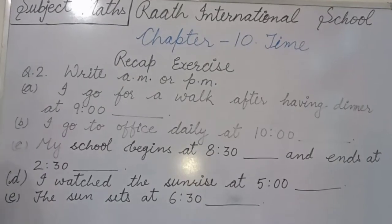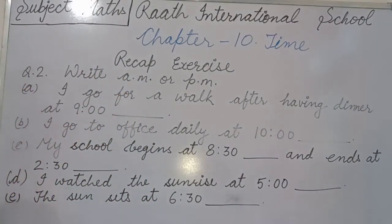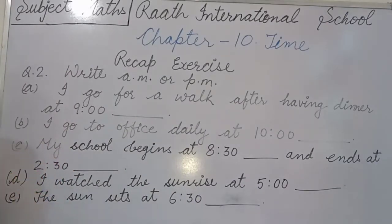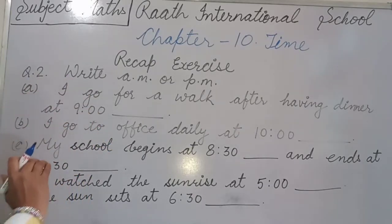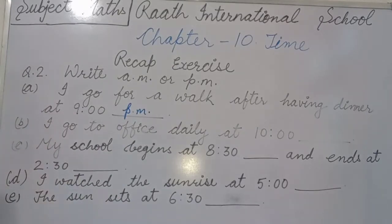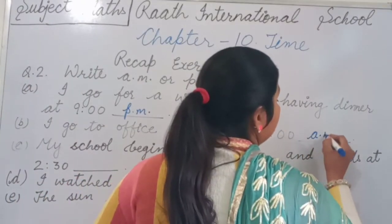Question 2: Write AM or PM. Part A: I go for a walk after having dinner at 9 — dinner is at night, so that is PM. Part B: I go to office daily at 10 — office is open in daytime, so that is AM.